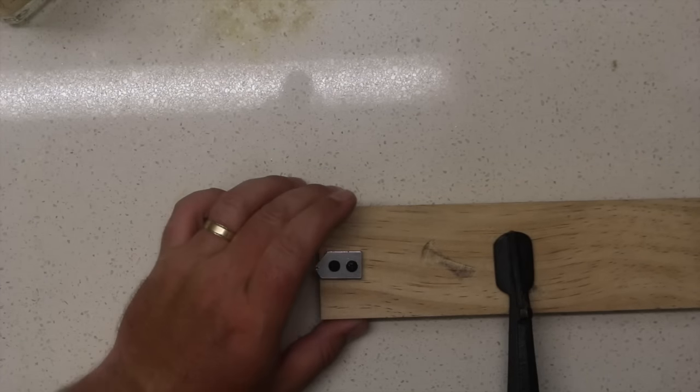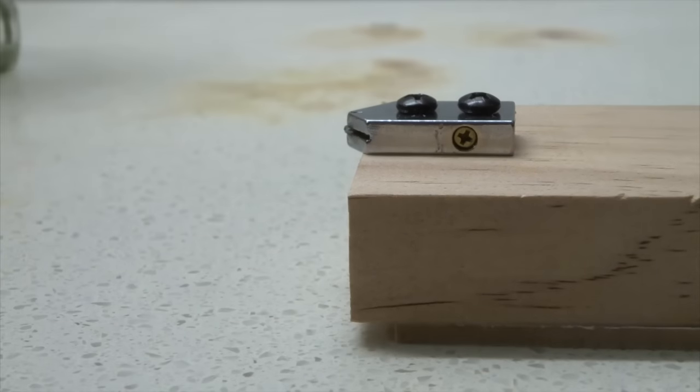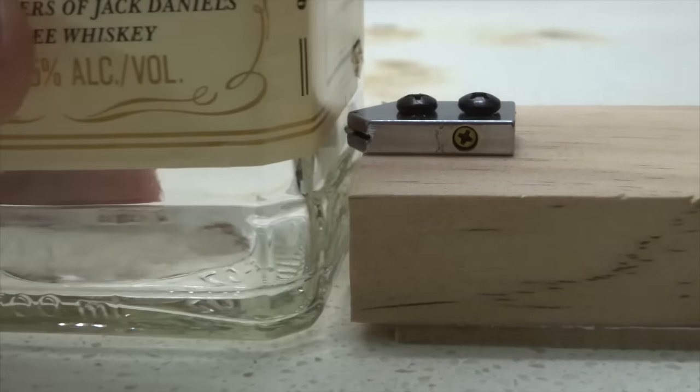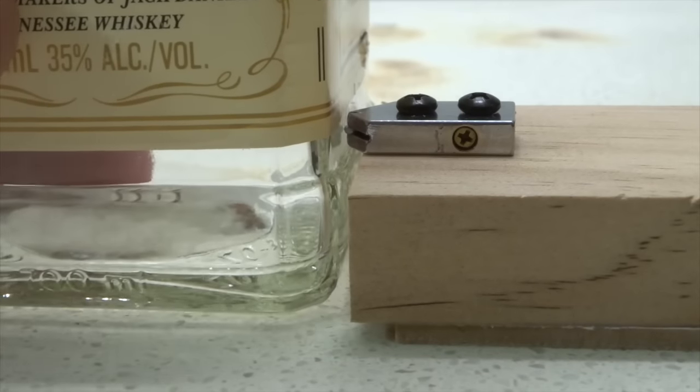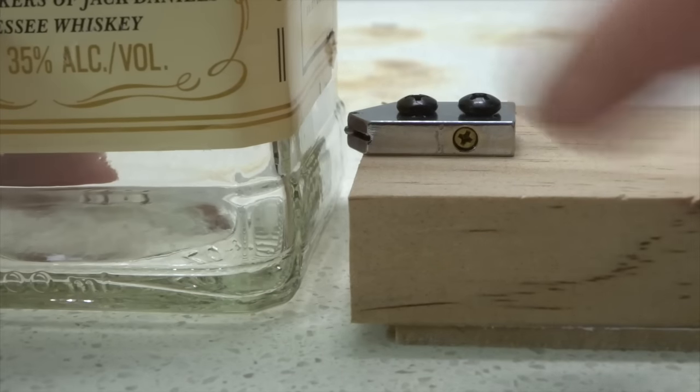Now the most important thing here is the roller on the end must protrude past your workpiece, so when you bring your glass up to it, it doesn't impede anywhere. You can get a nice solid contact point. Now I had to pack mine up a little bit just here.